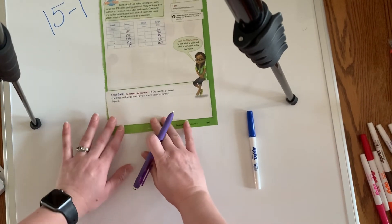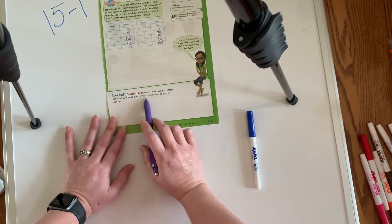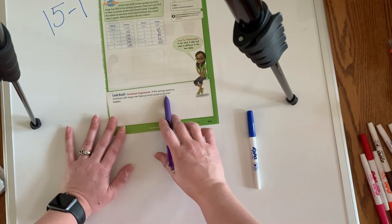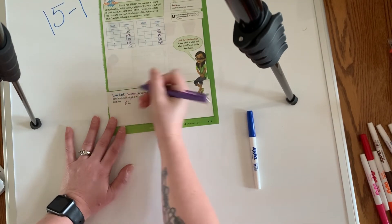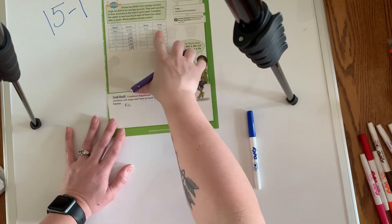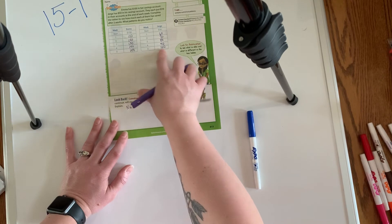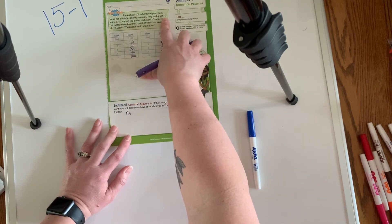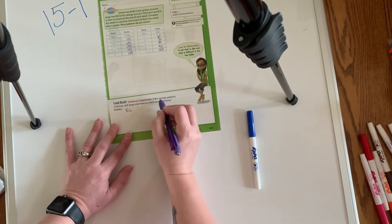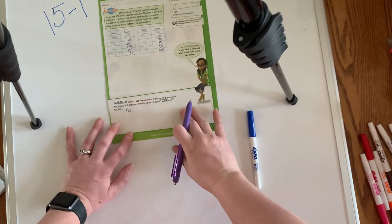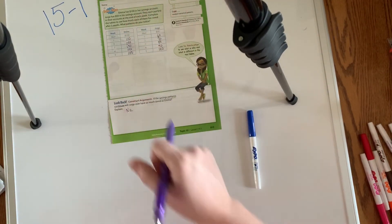The question at the bottom asks: if the saving pattern continues, will Jorge ever have as much saved as Emma? The answer is no, because he started off with less than she did, but they're saving the same amount. Since the savings pattern is continuing at the same rate, he will never catch up. And that is lesson 15-1.